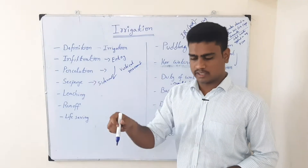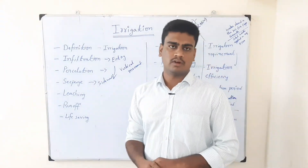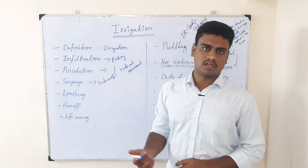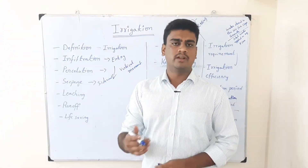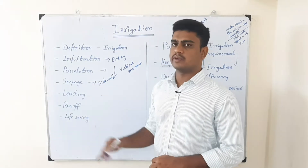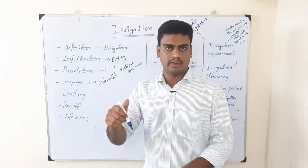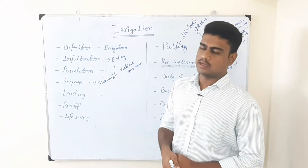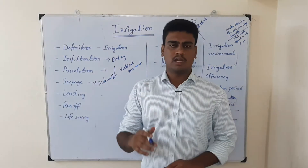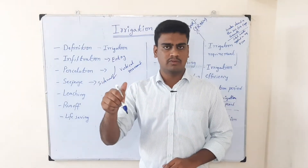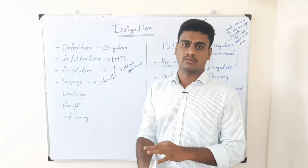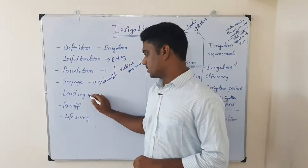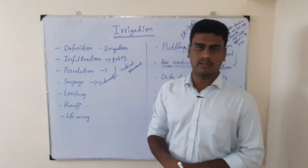Let us see the meaning of leaching. Leaching is when water enters the soil and spreads to all sides, and along with that it moves toward the downward layers of the soil. The nutrients and salts present in the soil get diluted into the water and move toward the deepest layers, away from the root zone — beyond the root zone. That movement of nutrients and salts downward beyond the root zone is called leaching.